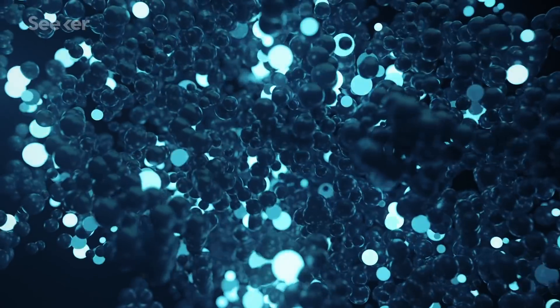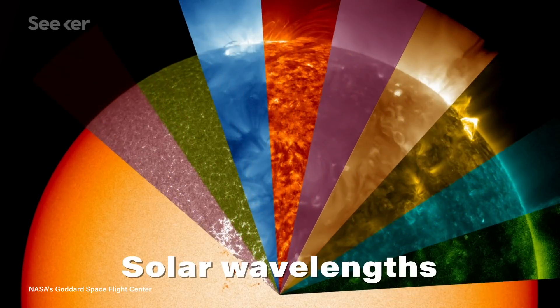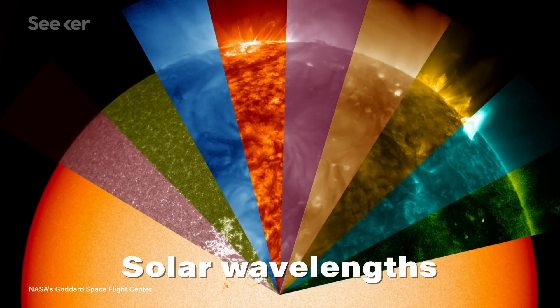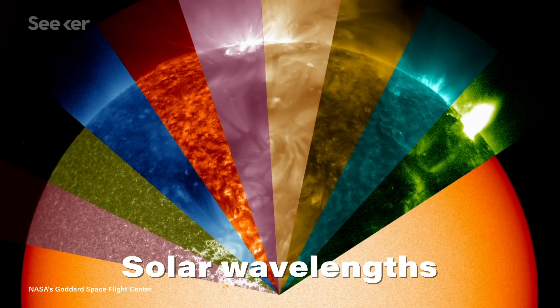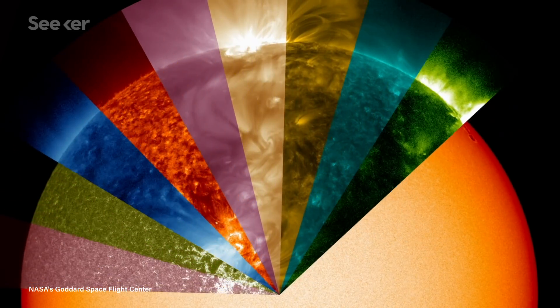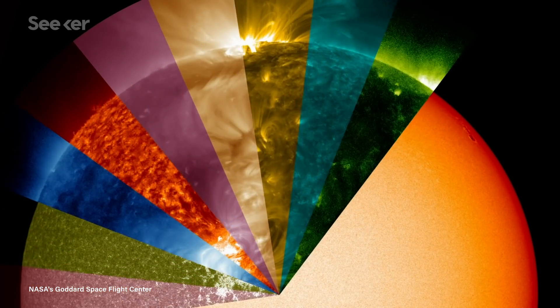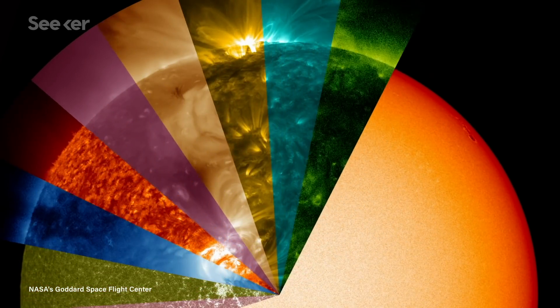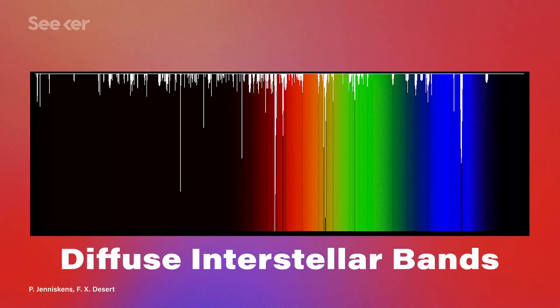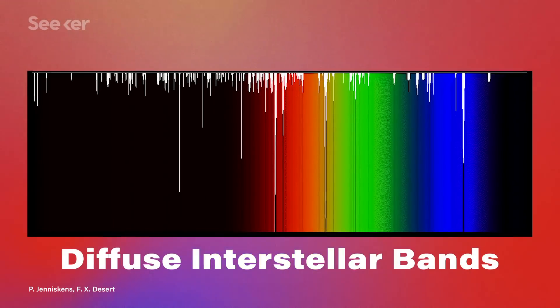When we observe starlight, a broad range of colors are missing, and in patterns unlike any known atoms or molecules on Earth. These are the diffuse interstellar bands, or DIBS. There, now you can go back to the start of the video and laugh. Masterful joke telling, Julian.